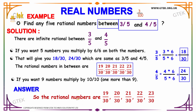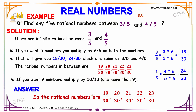This is how we solve these kinds of problems. As discussed, if the question asks for 9 numbers instead of 5, then we need to multiply by 10/10 in terms of numerator and denominator. I hope you got an idea of how to solve these kinds of problems. This is one simple and easy way to handle these kinds of real numbers problems.